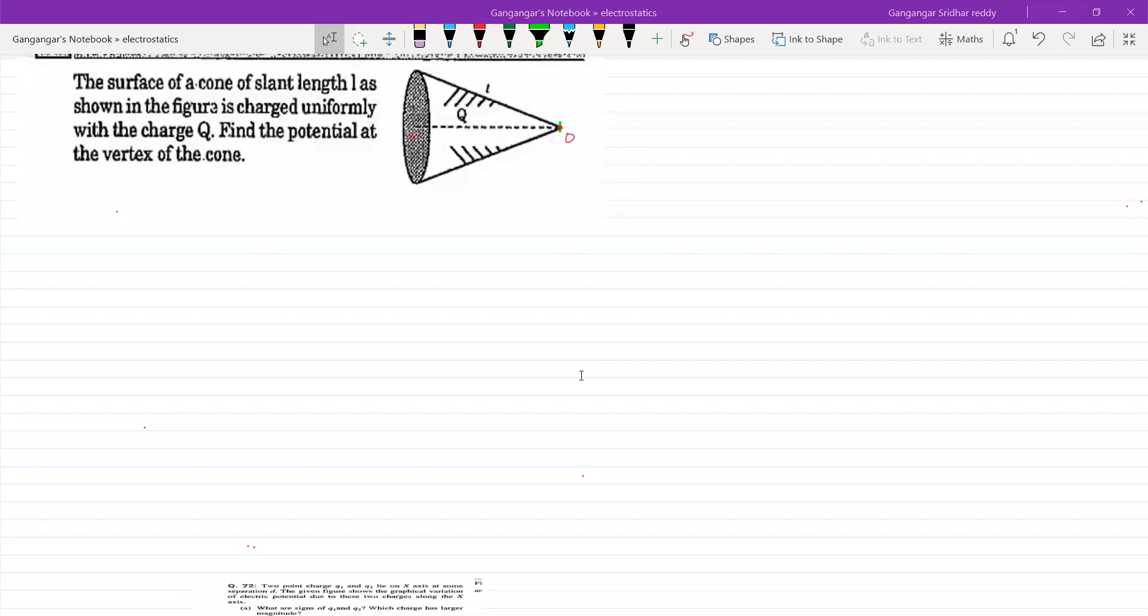It is not a solid cone. At least the surface of a cone of slant length L, as shown in the figure, is charged uniformly with the charge Q. So what type of charge, where will the charge be distributed? On the surface. The charge is distributed on the surface here.